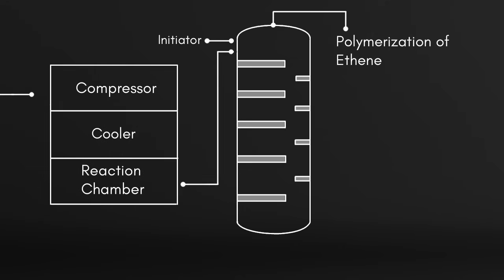In the reaction chamber, initiators are added. Initiators means a substance which starts chain reaction. Then polymerization takes place. By this process, the ethane is converted into polyethylene.